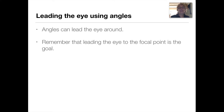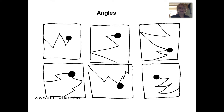Keeping that in mind, we're going to look at different ways you can lead the eye around to the focal point. Angles can lead the eye around — leading the eye to the focal point is the goal. Here are the different angles: you have an angle coming in from the left leading to the focal point, one from the bottom, one that starts at the top and leads out again, two lines from the bottom, two lines from the top, and one line from the left leading to the focal point.